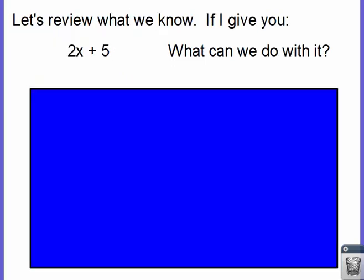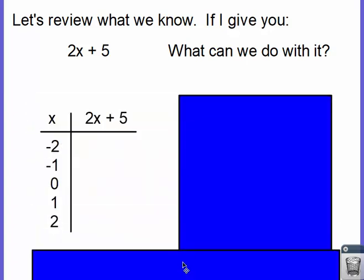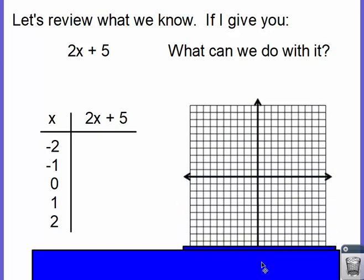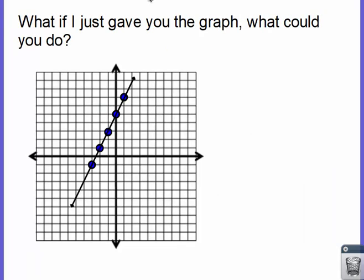So if I were to give you 2x plus 5, what are the two things that we can do right now? We can create a t-chart by taking each one of these x values, plugging it into the expression 2x plus 5, and coming up with some y values. Once we have those y values, we have a set of coordinates that we can put on a graph. That's what we know so far. In the assignment the other day, I gave you a graph and told you to create a t-chart from it — so we learned how to do that.